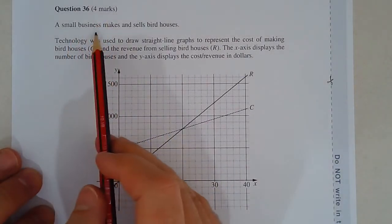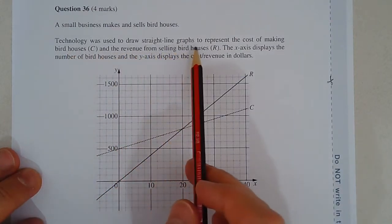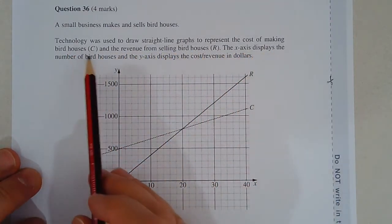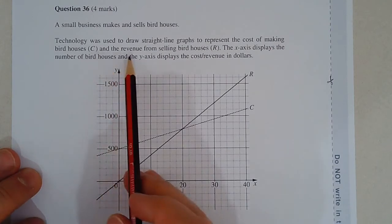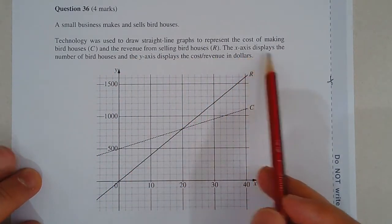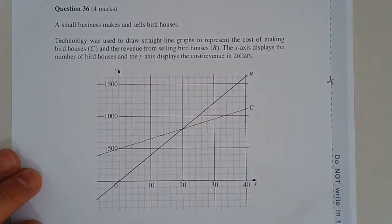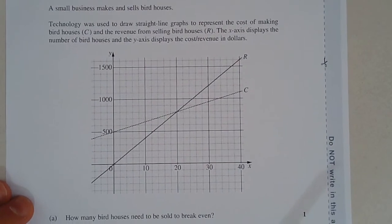Question 36. A small business makes and sells birdhouses. Technology was used to draw straight line graphs to represent the cost of making birdhouses, C, and the revenue from selling birdhouses, R. The x-axis displays the number of birdhouses and the y-axis displays the cost or revenue in dollars. There's the graph.